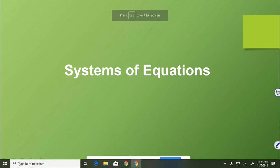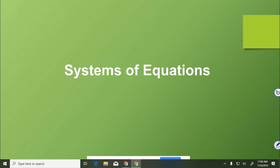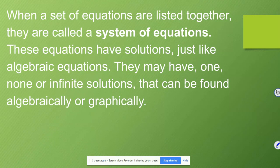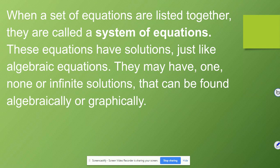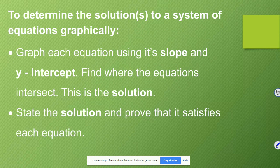Hey gang, today we're going to be looking at systems of equations, which just means we're going to be graphing more than one equation on a coordinate plane at a time. When a set of equations are listed together, they are called a system of equations. These equations have solutions just like algebraic equations. They may have one, none, or infinite solutions that can be found algebraically or graphically. Today we're going to focus on solving these systems graphically and only looking at ones with one solution.